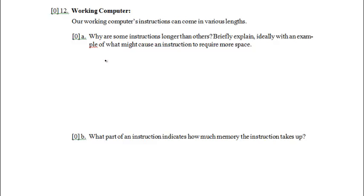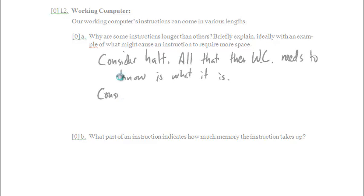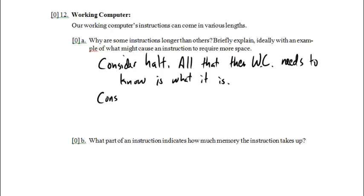Now why would one instruction be longer than another? Well, consider the halt instruction. All we need to know for that, all that the working computer needs to know, is what it is. It just needs to know 'I want to stop.' So there's no extra information there. On the other hand, consider a jump instruction, for example.